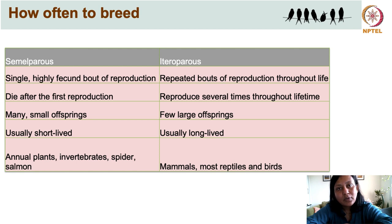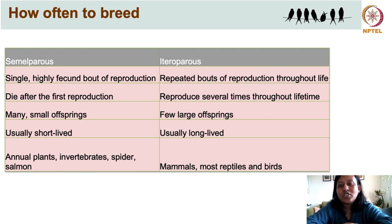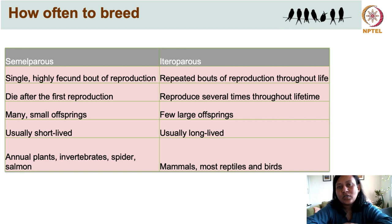Semelparous organisms often die after the very first bout of reproduction, produce many but very tiny offspring, and are usually short-lived. Examples include annual plants like grasses — which produce copious amounts of seeds — invertebrates, spiders, and of course the most famous examples: salmon. The second category are iteroparous species, and most mammals, reptiles, and birds belong to this category. They are characterized by repeated bouts of reproduction throughout their lifetime.